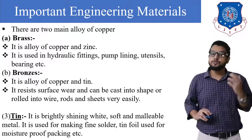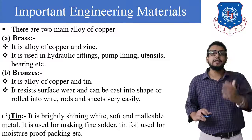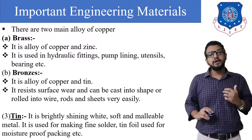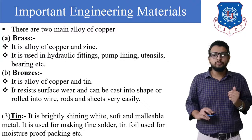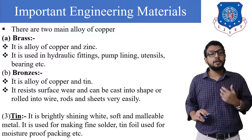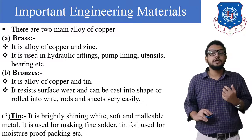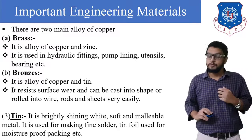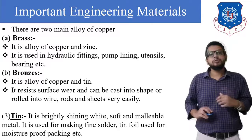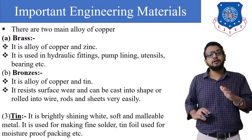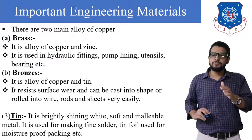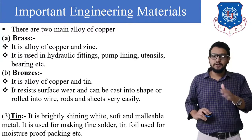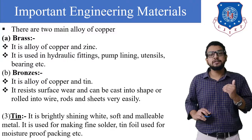The next non-ferrous metal is tin. It is a brightly shiny, white, soft, and malleable metal. It is used for making thin foil used for moisture-proofing. Up to here we have covered the non-ferrous metal types.